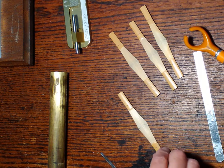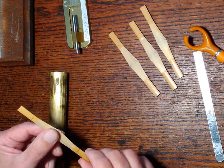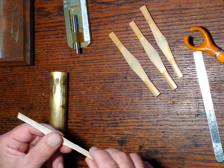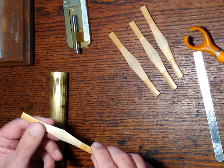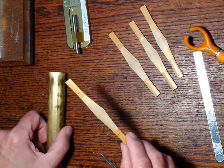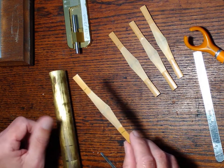Today I'm talking about scoring a reed blank and beveling the edges so that it will be ready to fold in half to make a blank.